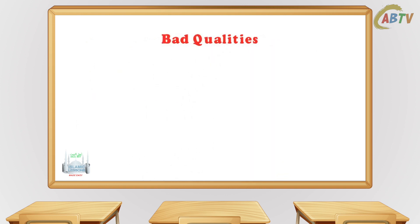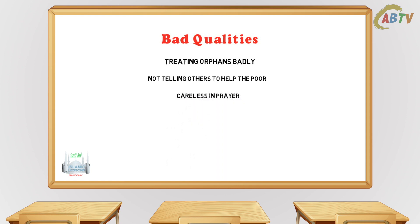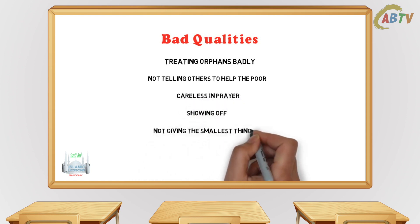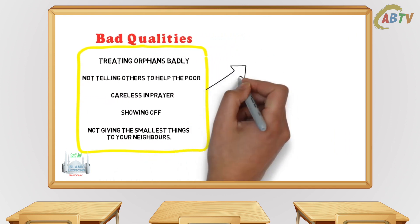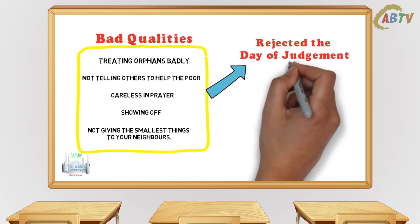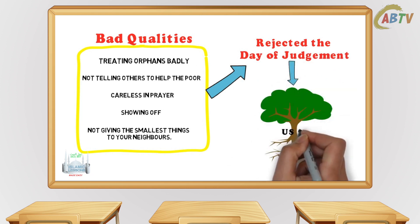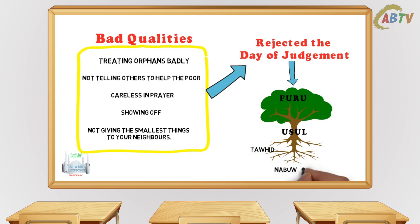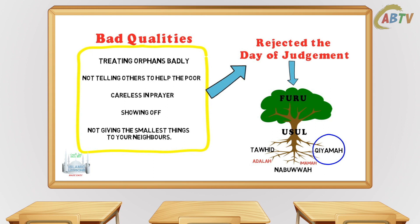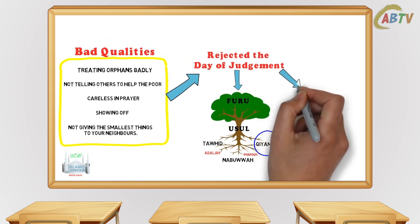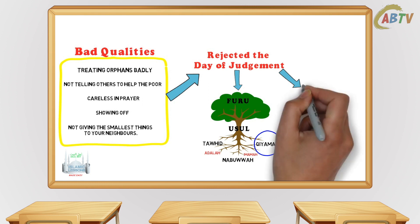So from the start of this surah, it talks about some bad qualities: treating orphans badly, not telling others to help the poor, being careless in prayer, showing off, and not even giving the smallest things to your neighbors. All these bad qualities are because they rejected the Day of Judgment. The Day of Judgment is one of the main usul al-din — every Muslim must believe in them. If you don't believe in any of them, you will not be considered a Muslim. The person that rejects the Day of Judgment doesn't care about reward and punishment, and that's why it's easy for them to have these qualities.